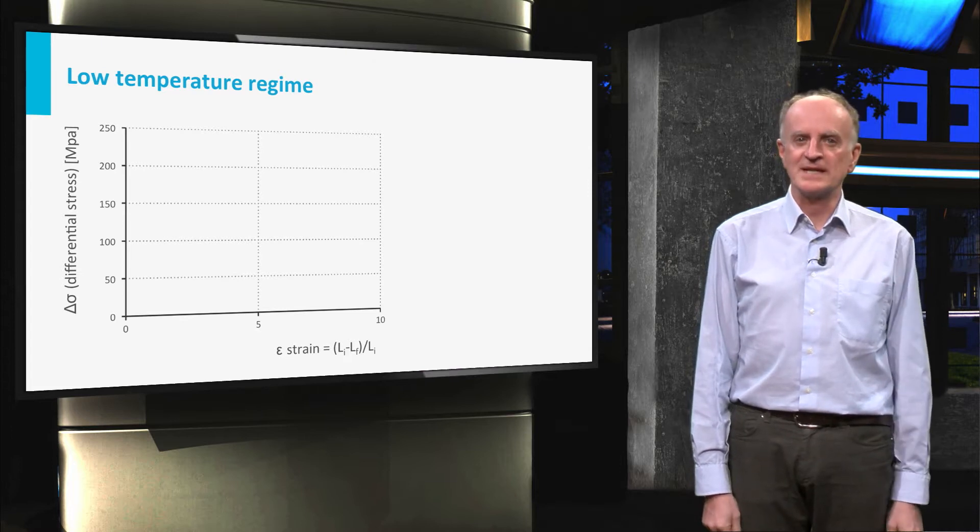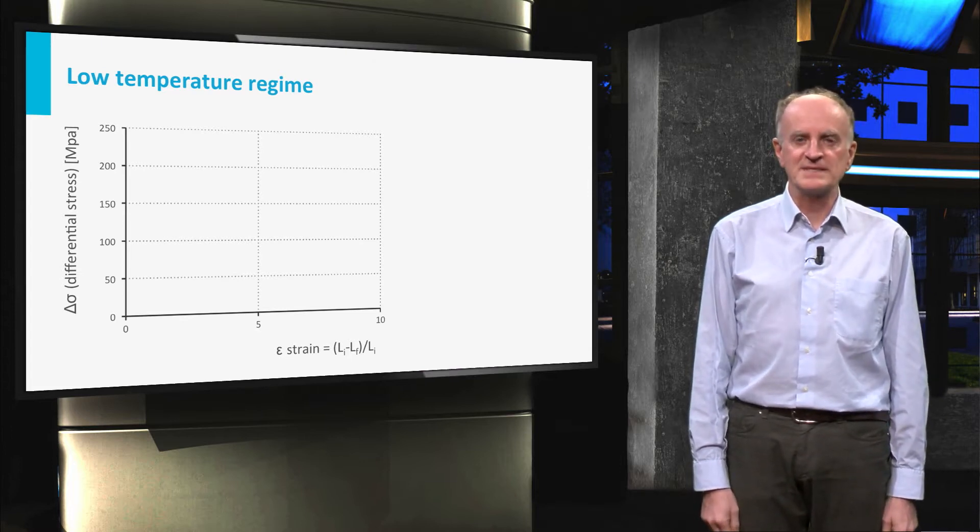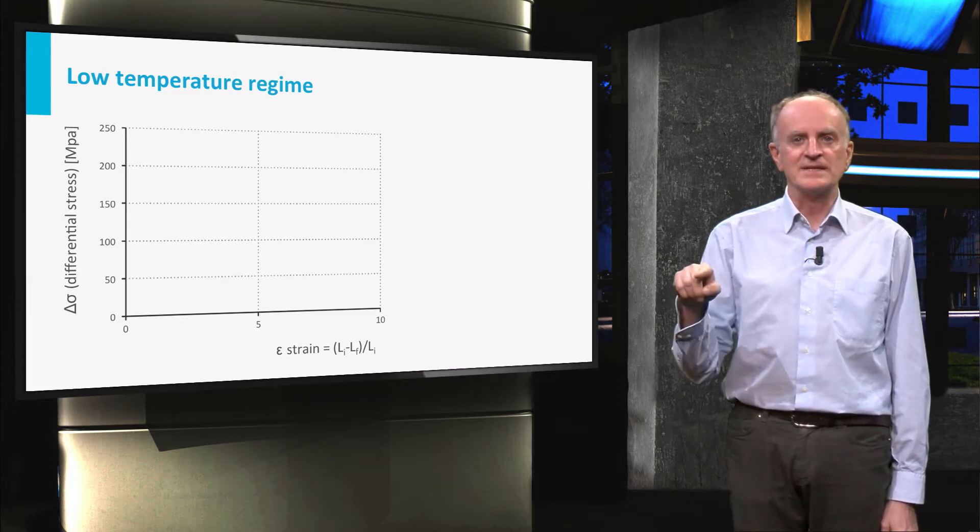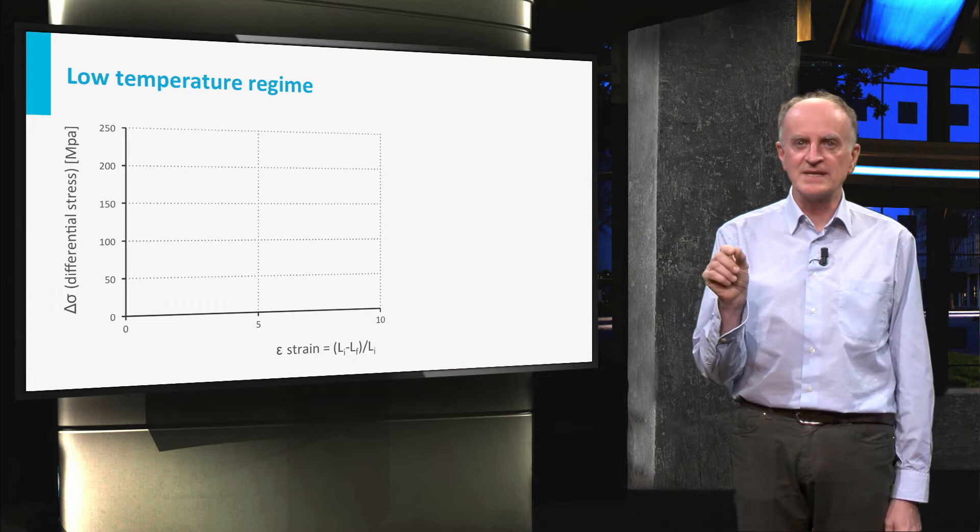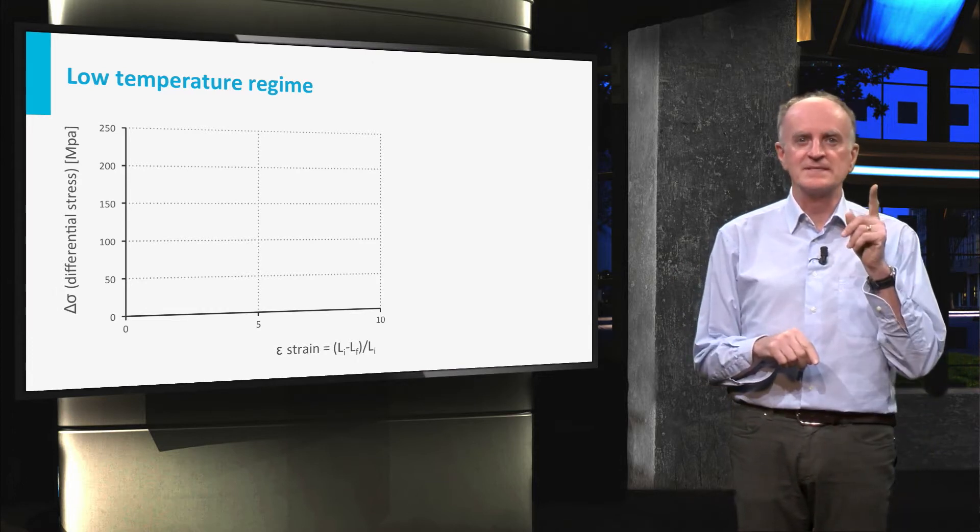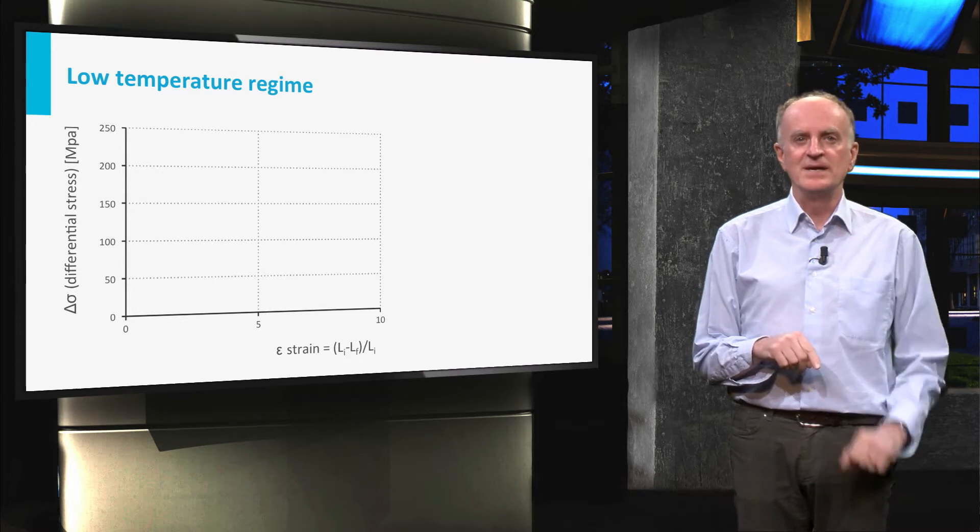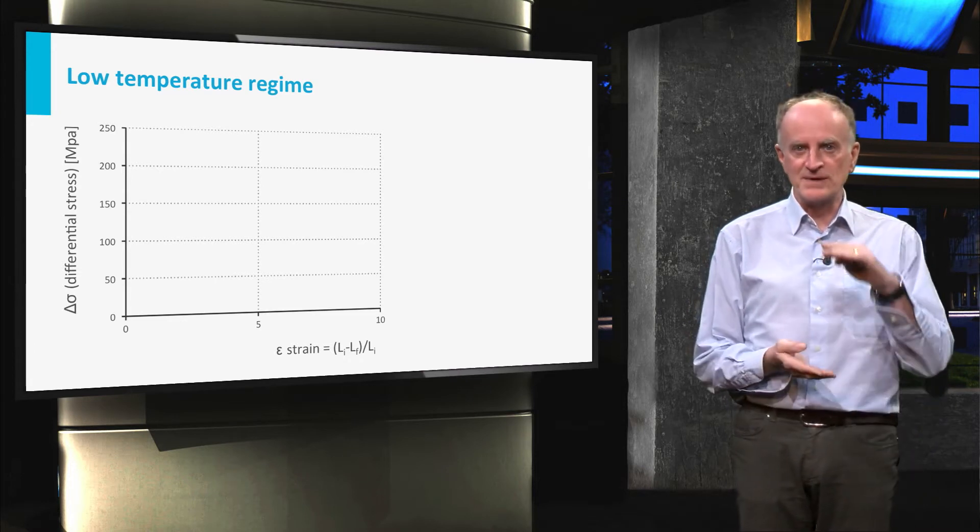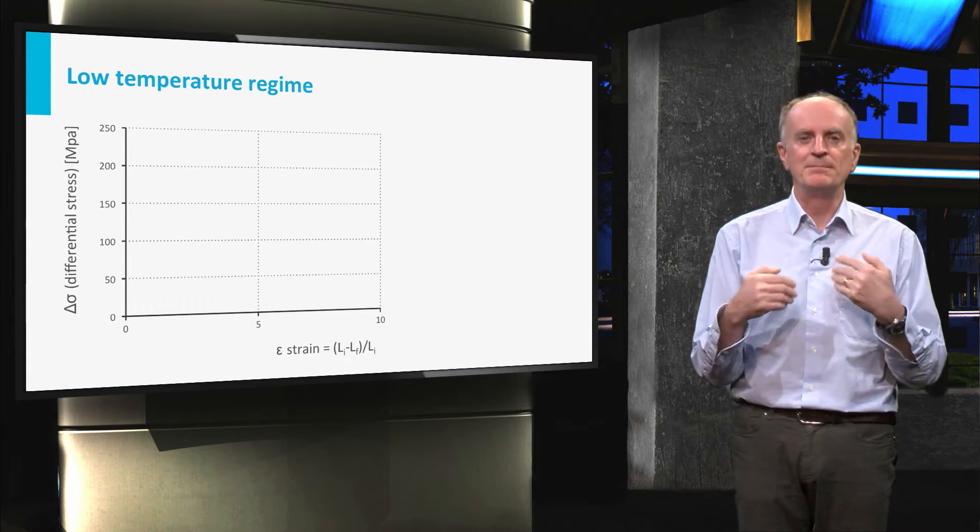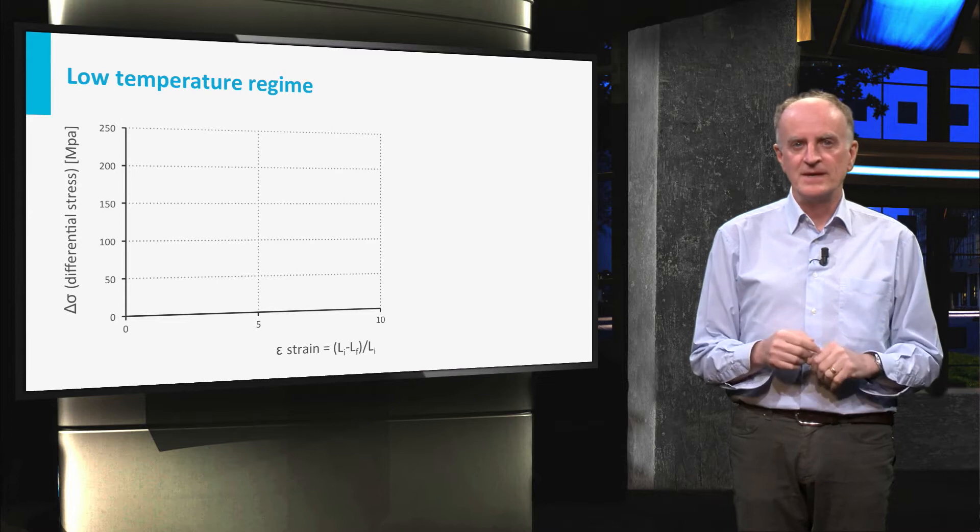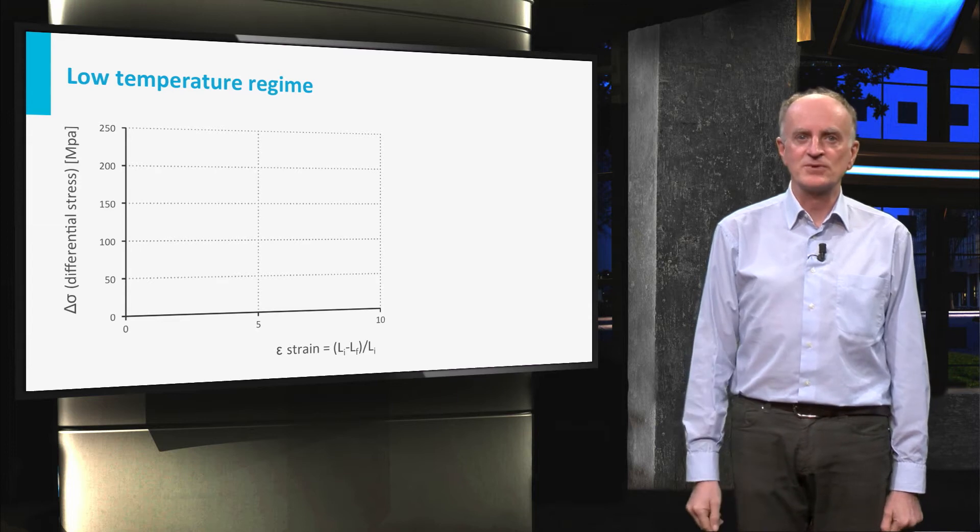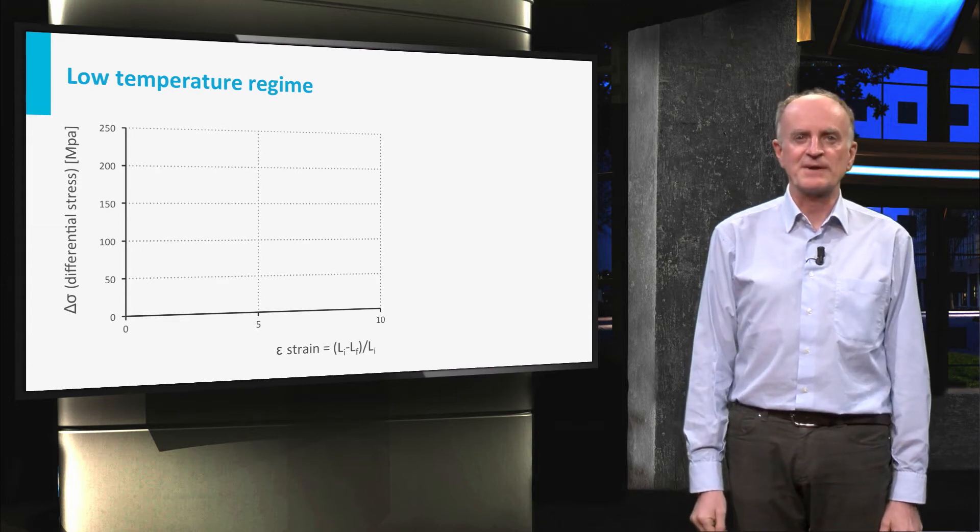A common way to display the results of rock mechanic experiments is a stress-strain diagram. On the horizontal axis you can see the strain, which is the shortening experienced by the sample during the experiment. On the vertical axis you have delta sigma, which is the difference between the stress applied to the piston and the confining pressure which was decided at the beginning of the experiment.